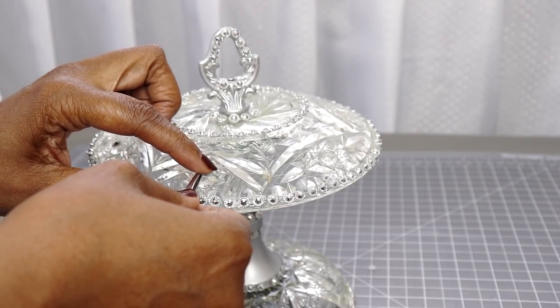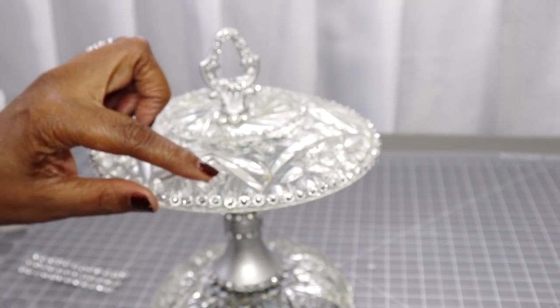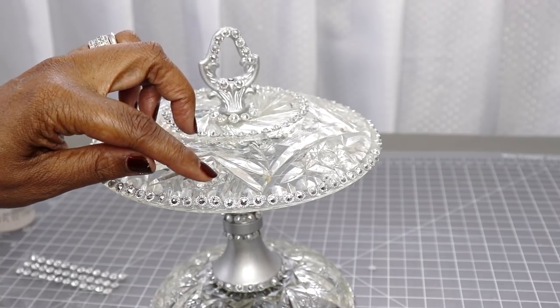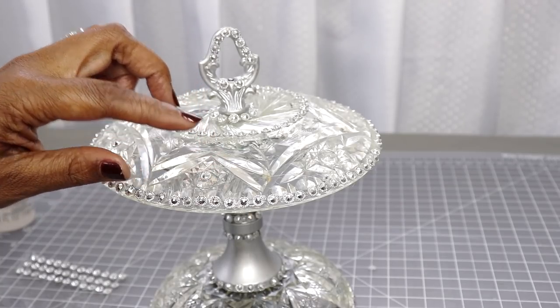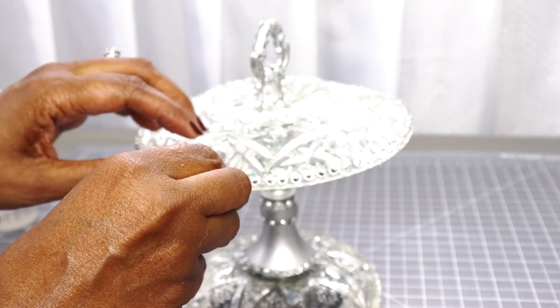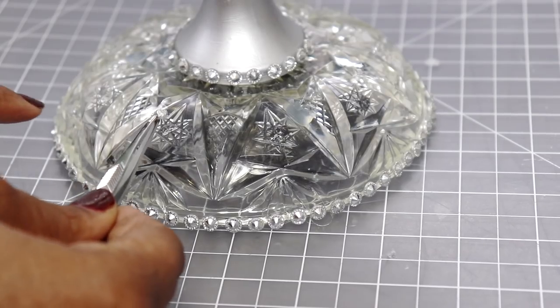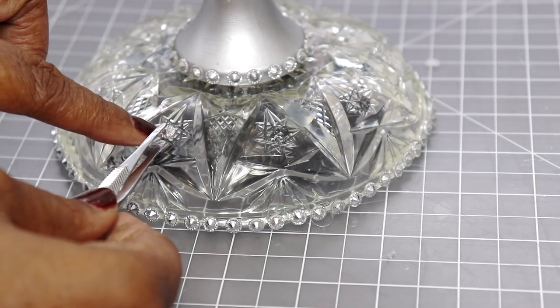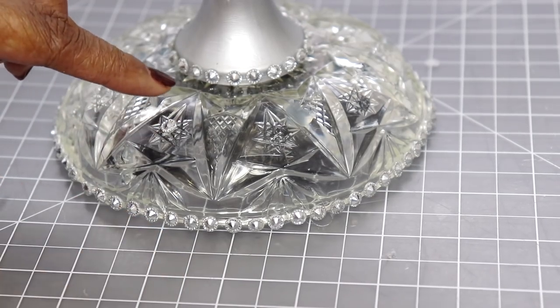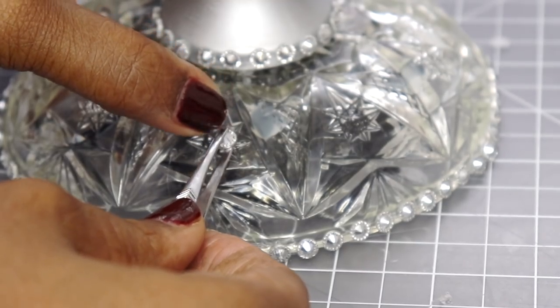Right here I'm just adding a little bit more of those silver embellishments, just putting them in different places on the lamp just to give it a little bit of sparkle. And after I do that guys, it's done.